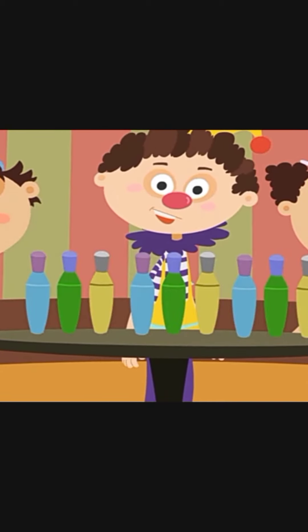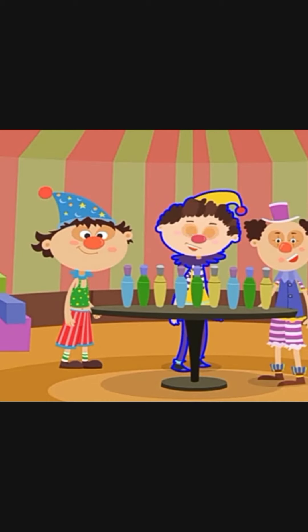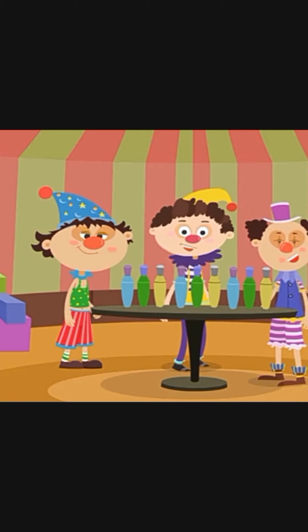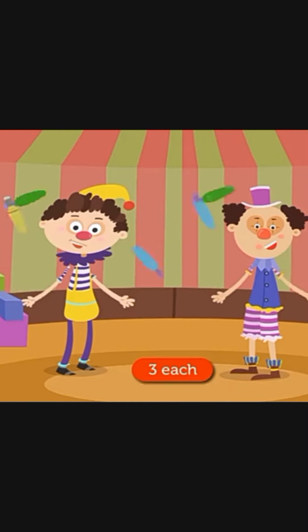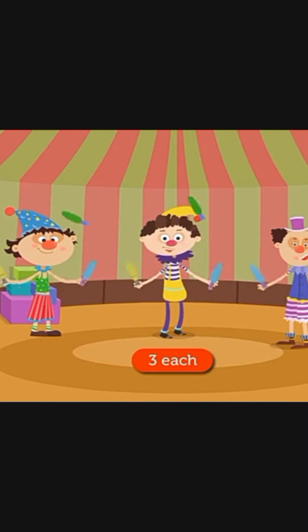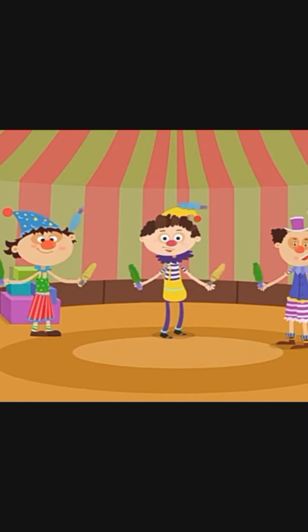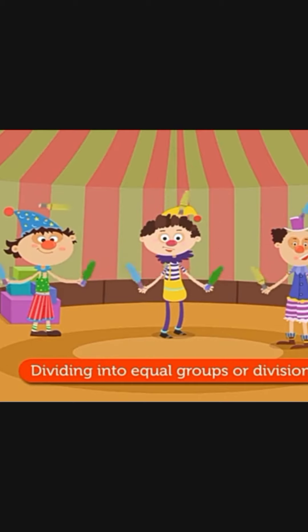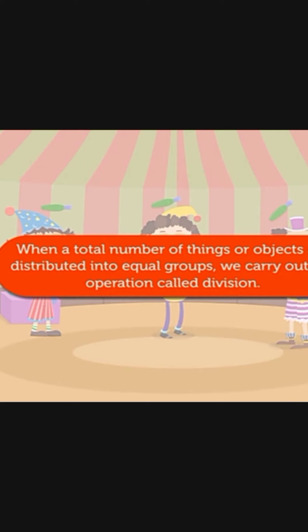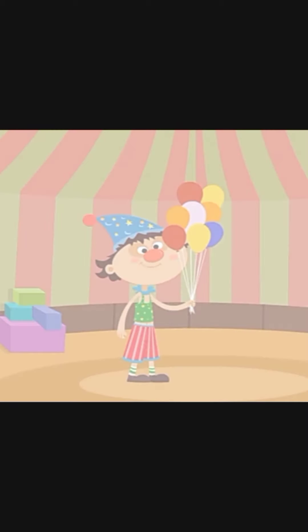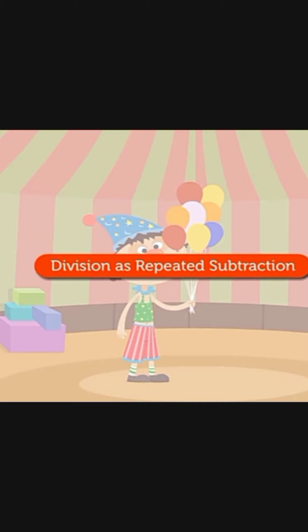Look! Who joins Jumbo and Jimbo? He is Jojo, the clown. Now we need to distribute these nine bottles equally between Jumbo, Jimbo, and Jojo. How many will each one get? Each will get three bottles. In all these examples we shared the number of objects equally according to the number of groups. This is called dividing into equal groups or division. When a total number of things or objects are distributed into equal groups, we carry out the operation called division.